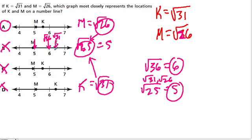So, although k is between 5 and 6, the square root of 31, 31 is further from 25 than 26 is from 25, so it's further from 5 than m. So, you can even get a sense of where these points should be relative to 5 and 6, not just between them, but which one's closer.